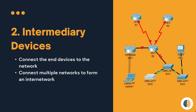Intermediary devices are used to connect end devices to the network. In this diagram, laptop one is connected to wireless router one, and this PC is connected to the switch. The laptop and the PC are considered as end devices. Any device that facilitates the communication between the laptop and the PC is known as an intermediary device.